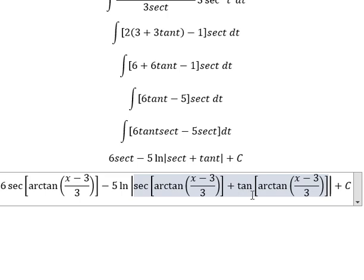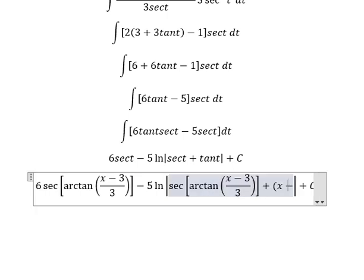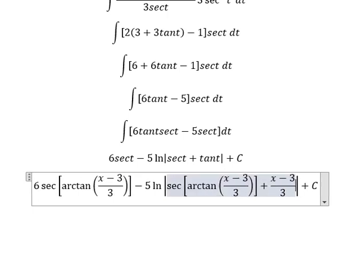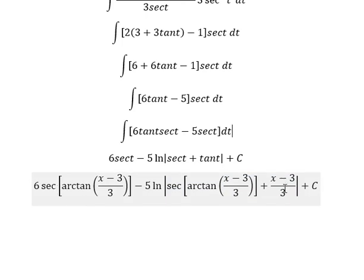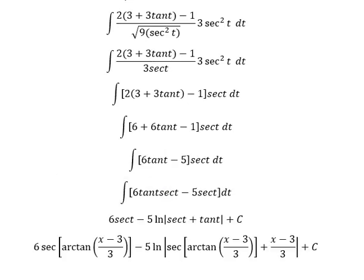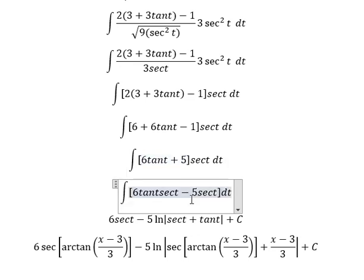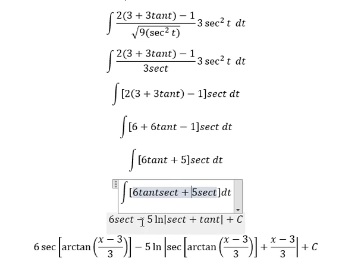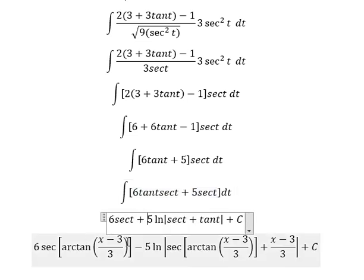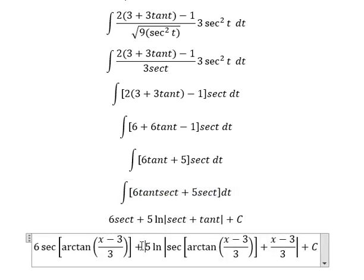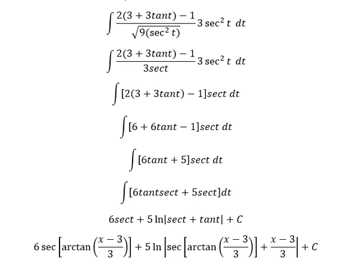And we know that tan of arctan of (s minus 3) over 3 gives us (s minus 3) over 3. This is the final answer — the exponent is positive 5, not negative. This is the end. Thank you for watching.